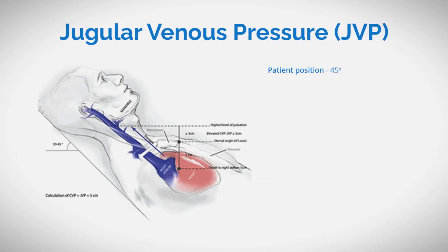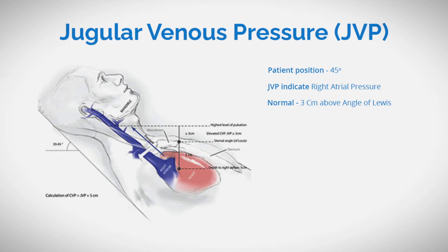Positioned at 45 degrees, the JVP, reflecting right atrial pressure, typically stands at 3 cm above the sternal angle, also known as the angle of Lewis, or the manubrio-sternal junction.